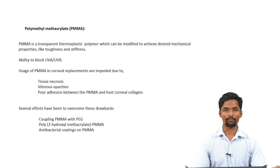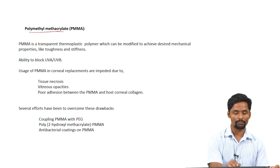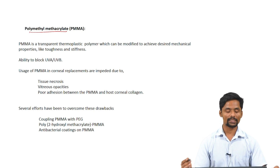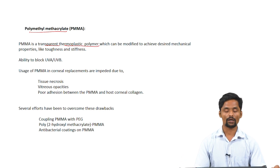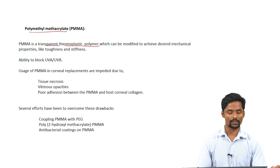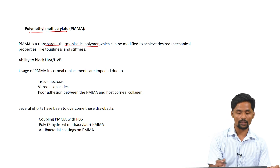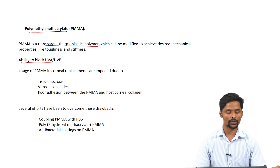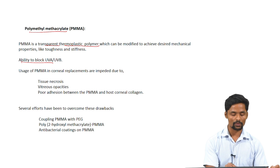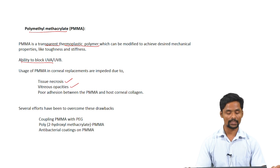The predominantly widely used synthetic polymer for corneal tissue engineering is polymethyl methacrylate, or PMMA. PMMA is a transparent thermoplastic polymer that can be modified to achieve required mechanical properties like toughness and stiffness. PMMA also has the ability to block UV light, making it more suited for corneal tissue engineering. However, usage of PMMA is impeded due to tissue necrosis, vitreous opacities, and poor adhesion between PMMA and host corneal collagen.